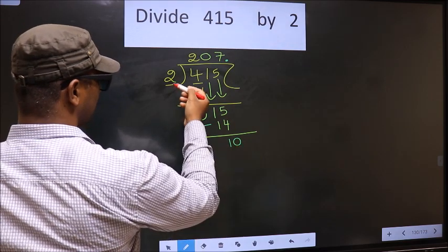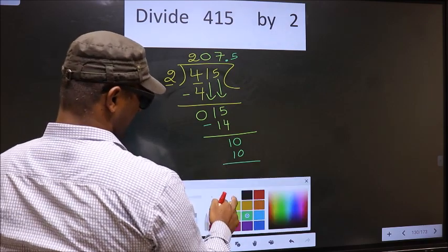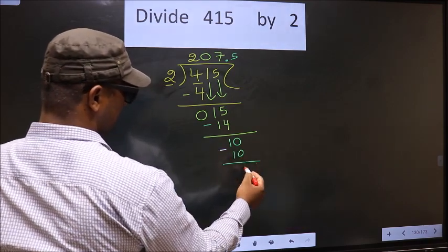So 10. When do we get 10 in the 2 table? 2 times 5, 10. Now you subtract: 10 minus 10, 0.